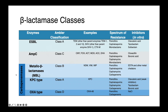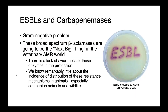We have different types of carbapenemases. There are many different enzymes with carbapenem-degrading activity, including a number of our metalloenzymes — VIM and NDM — a class A carbapenemase in our KPCs, and oxacillinases capable of hydrolyzing carbapenems as well. When it comes to ESBLs and carbapenemases, these are really a gram-negative problem — almost the flip side of the methicillin-resistance coin. In veterinary medicine, particularly in companion animals, there's a lack of awareness about these beta-lactamases and the implications for therapeutic selection.